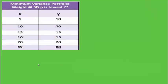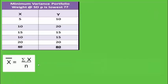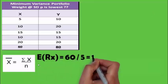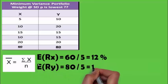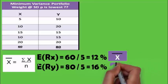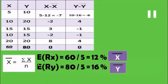These are the returns of the stocks. To calculate the expected return, we take the weighted average: 60 divided by 5 for stock X gives 12%, and 80 divided by 5 for stock Y gives 16%. That is the simplest calculation.